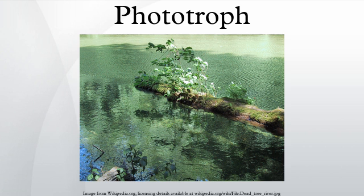Phototrophs can be either autotrophs or heterotrophs. Most of the well-recognized phototrophs are autotrophic, also known as photolithotrophs, and can fix carbon. They can be contrasted with chemotrophs, which obtain their energy by the oxidation of electron donors in their environments.